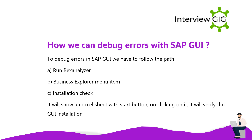How can you debug errors with SAP GUI? To debug errors in SAP GUI, follow this path: a) run BEX Analyzer, b) Business Explorer menu item — Objects, c) Installation Check. It will show an Excel sheet with a Start button; on clicking it, it will verify the GUI installation.